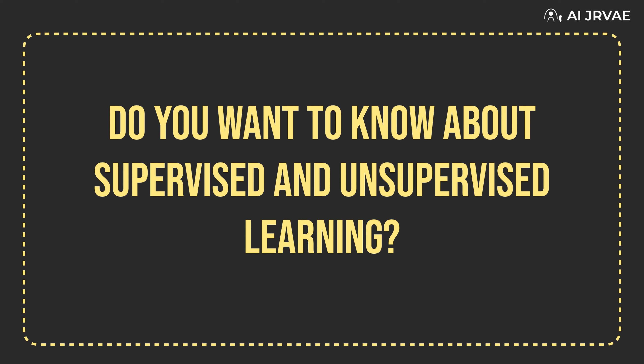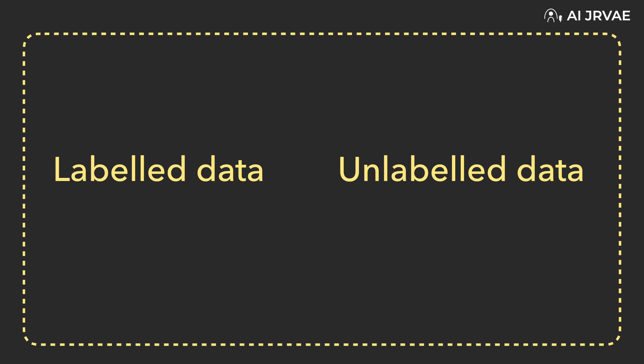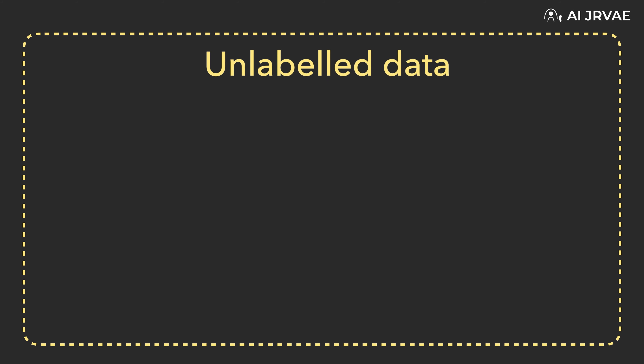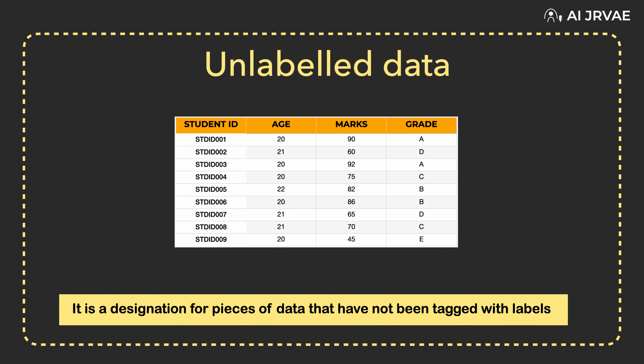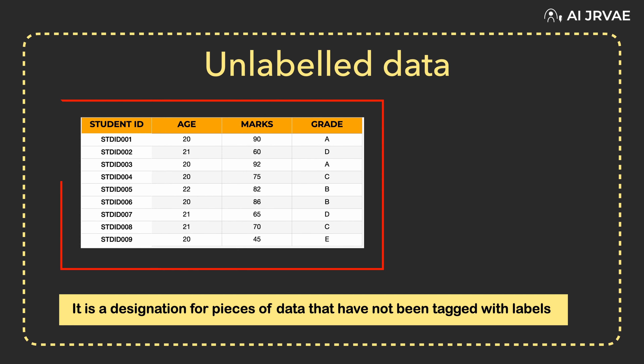Before going to supervised learning and unsupervised learning, I want you to know what is labeled data and unlabeled data. Unlabeled data is a designation for pieces of data that have not been tagged with labels identifying characteristics, properties, or classifications.